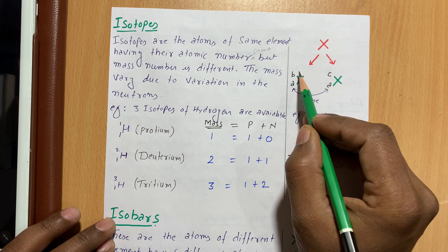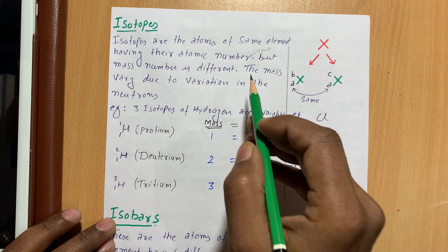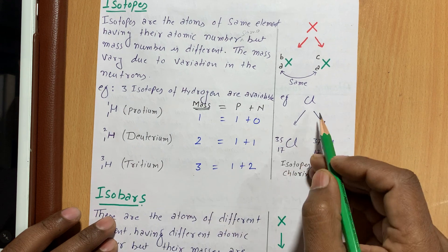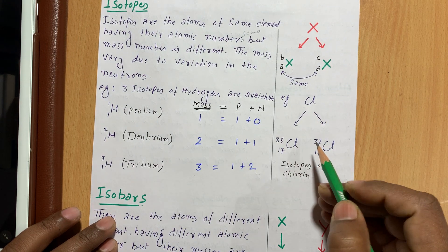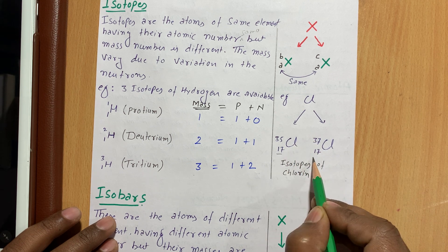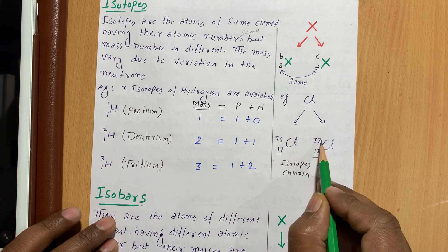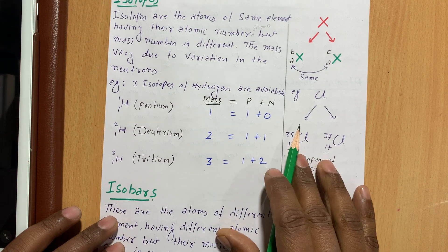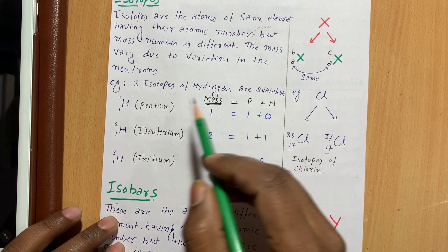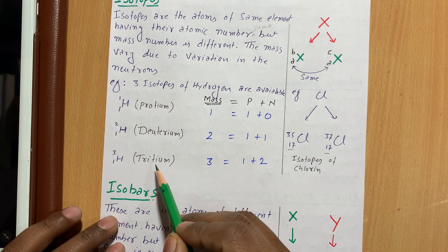Mass varies because the number of neutrons varies. For example, chlorine has two variants — both have atomic number 17, but their masses are different: one is 35 and one is 37. Hydrogen has three isotopes: H-1 (protium), H-2 (deuterium), and H-3 (tritium), with mass numbers 1, 2, and 3 respectively.